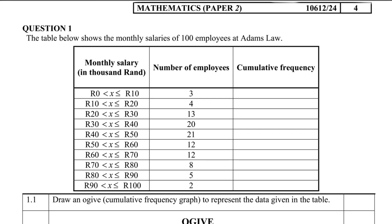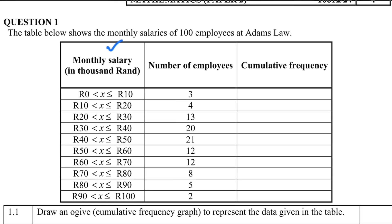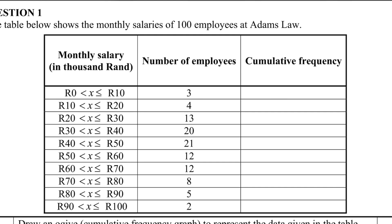We need to represent the data given in the table: monthly salary in thousand rand, number of employees, and in the last column the cumulative frequency. To draw the cumulative frequency graph we need the cumulative frequencies first. From 0 to 10,000 we have 3 employees, so the cumulative is 3. From 10 to 20,000 is 4 employees, so cumulative is 3 + 4 = 7. From 20 to 30,000 there are 13 employees, so 7 + 13 = 20. Continuing: 20 + 20 = 40, 40 + 21 = 61, then 93, 98, and finally 100.